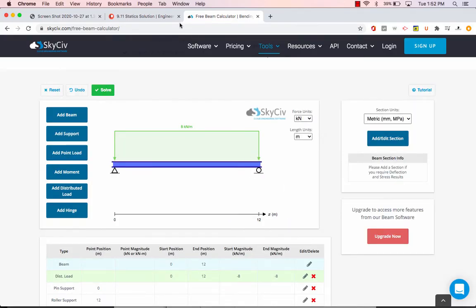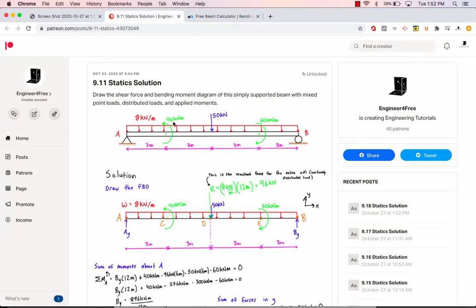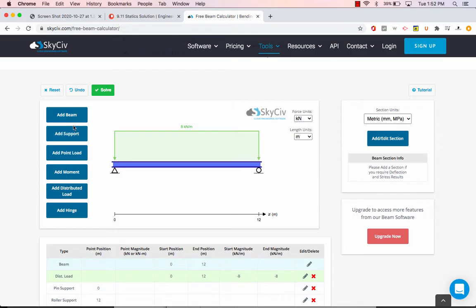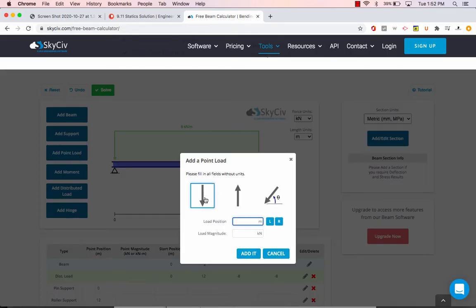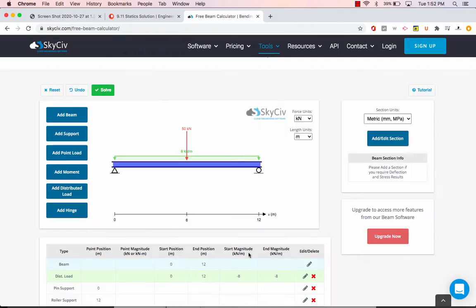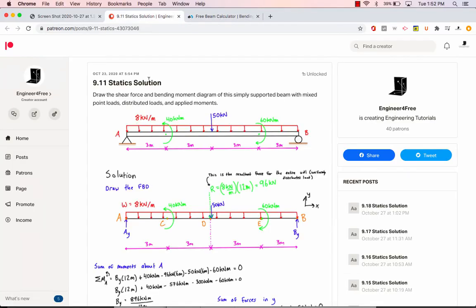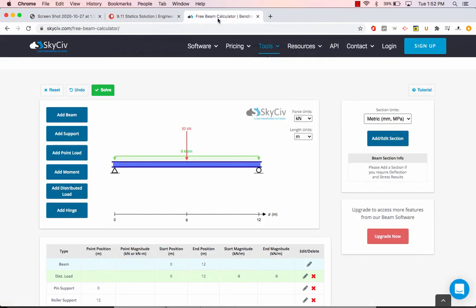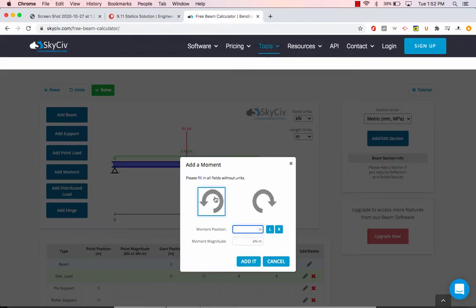We have a point load of 50 kilonewtons pressing down at mid-span. We're going to add in a point load pressing down at mid-span, which was 6 meters and it was 50 kilonewtons. The other thing that we had is a counterclockwise moment at 3 meters of 40 kilonewtons. So we're going to add in a moment counterclockwise at 3 meters and that was 40 kilonewton meters.